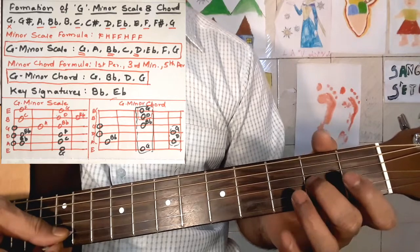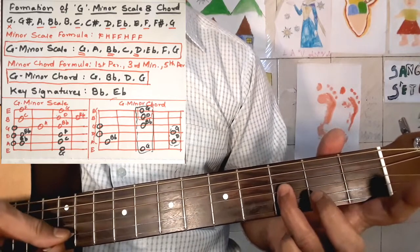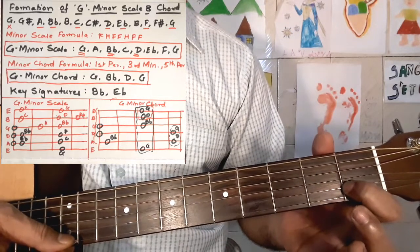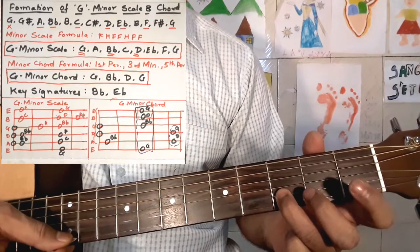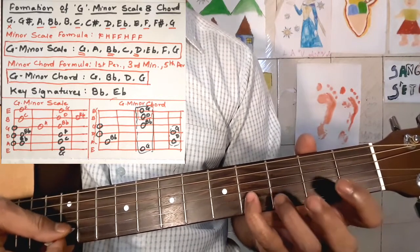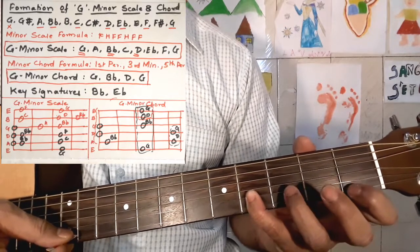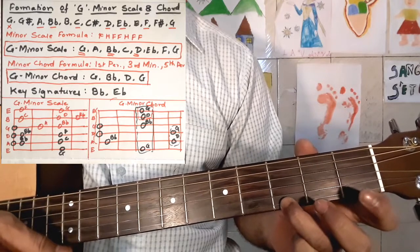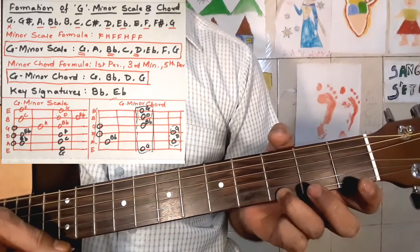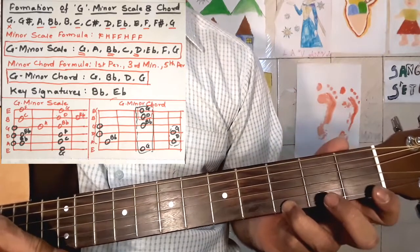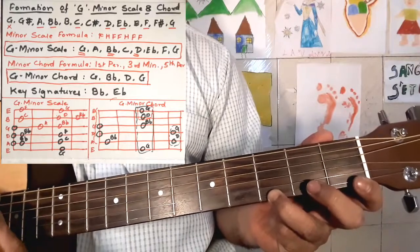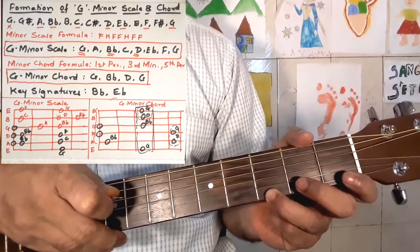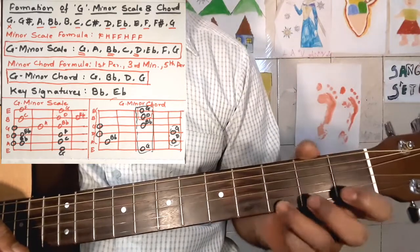Let's proceed further — G, A, B flat, C, D, E flat, F, and G. This is the second octave of the G minor scale on the first four frets. Now let's proceed towards the G minor chord formation. On the first fret we have G.